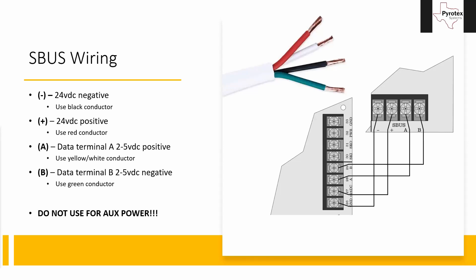Going back to the meter: black lead to negative, red lead to positive — you should see about 24 volts across those two terminals. Then move your leads and put the red on A and black on B. You should see somewhere between two and five volts DC. It varies depending on how many devices are on the circuit, but as long as it's above two volts, you've got enough signal strength. If it dips below two volts, that's when we use the RPS 1000 or the 5895 power supplies, which have an SBUS repeater built in.